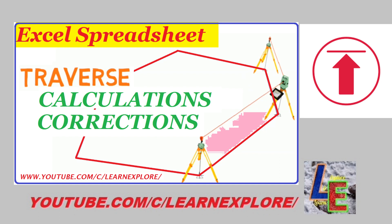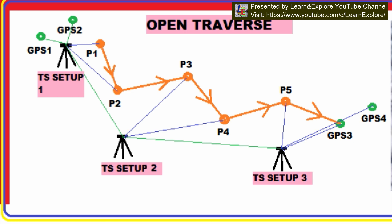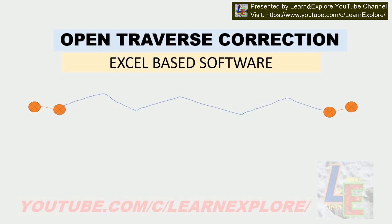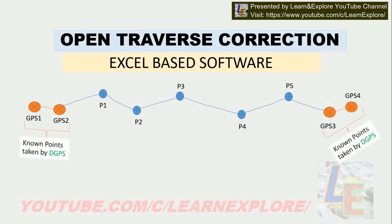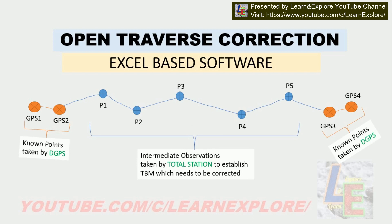In open traverse, we start surveying from one known point to another known point. In modern surveying, two pairs of known points are used in open traverse surveying, which have been set by DGPS — Differential Global Positioning System. Total stations are used to take measurements of intermediate points. Due to several factors like instrumental error, weather, or humidity, the total station data needs correction. In this Excel sheet we apply the Bowditch rule for the correction of open traverse data.